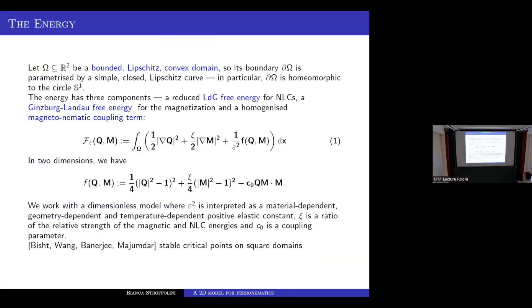The paper by Vish, Wong, Banerjee, and Majumdar motivates our mathematical analysis, at least in some regime. In that paper, they performed a numerical analysis of this energy for different values of c_0 and psi, studying stable critical points on a square domain. It turns out that for small values, line defects and non-orientable point defects appear, while for large values, orientable point defects appear. We were motivated to give mathematical justification for some of these results.